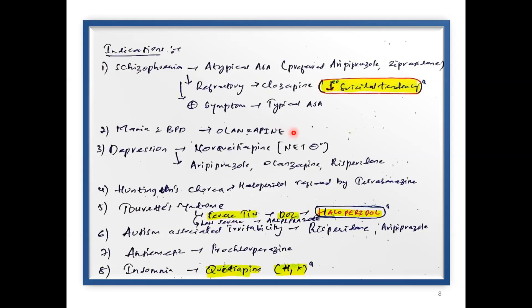Patients with predominant positive symptoms — typical antipsychotics play an important role as first-line. Olanzapine is important in mania and bipolar disorder because of its ability to block 5-HT2C and 5-HT7 receptors, which improves mood symptoms. In depression, norquetiapine by inhibiting the norepinephrine transporter makes norepinephrine available in the synapse for longer duration. Aripiprazole, olanzapine, and risperidone also have roles in depression — combined with other antidepressant agents, not as single agents.